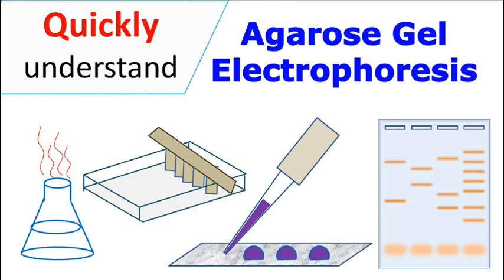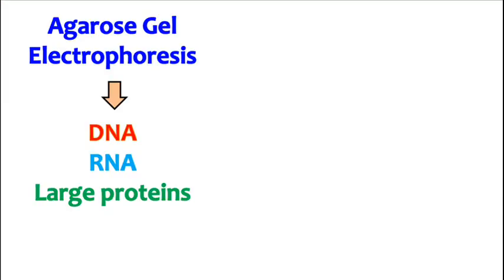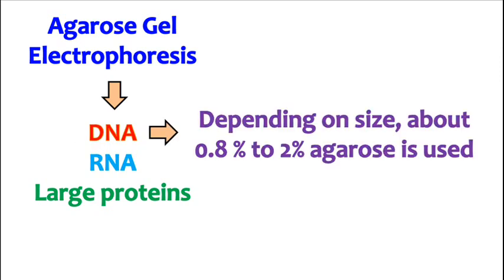Agarose gel electrophoresis is a technique used for separation of DNA, RNA and sometimes large proteins. It is widely used for the separation of DNA. Depending on the size of DNA which is to be separated, the concentration of agarose is kept between 0.8 to 2%.